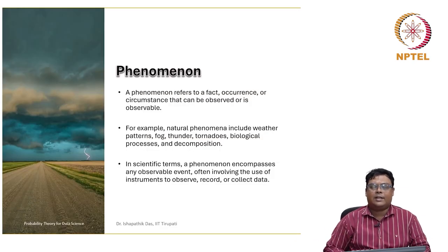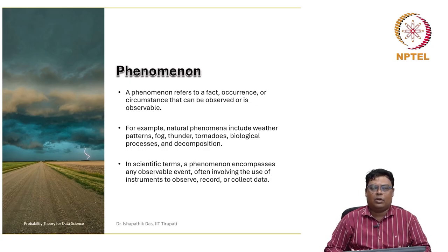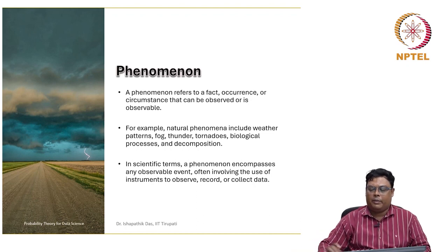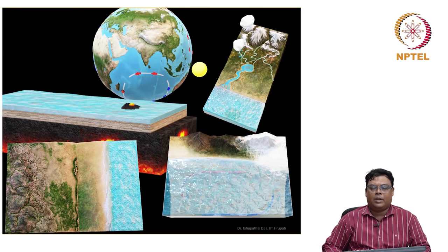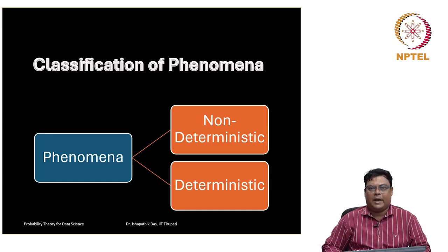Let us discuss what is phenomena. We want to relate this course to our nature and surroundings. Phenomena refer to a fact, occurrence, or circumstance that can be observed. For example, natural phenomena include weather patterns, thunderstorms, fog, thunder, and tornadoes. Phenomena can be classified into two types: one is called non-deterministic phenomena and another is called deterministic phenomena.